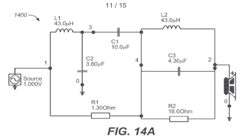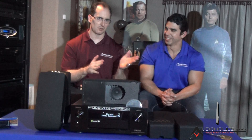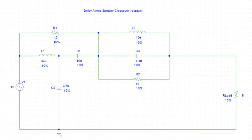It's got three inductors, three capacitors, two resistors, and the way they draw it in the patent, it makes you cross-eyed. So show them the patent crossover and then show them the way I redrew it that most engineers would better relate to. Your way is definitely much more clear.